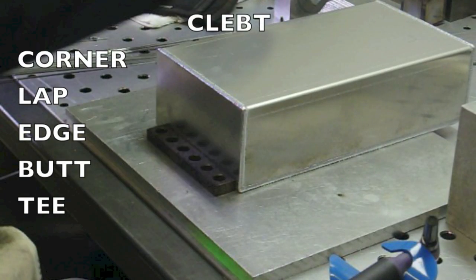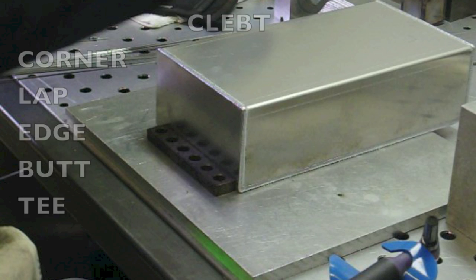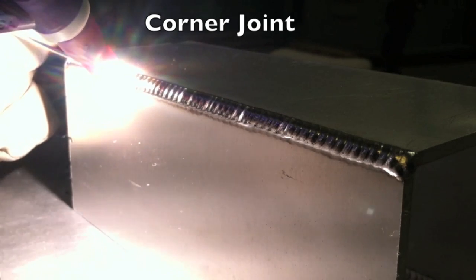For all you welding students out there, there are five types of weld joints. Not weld types, but weld joint types: corner, lap, edge, butt, and tee. We're going to take a quick look at them all right here.